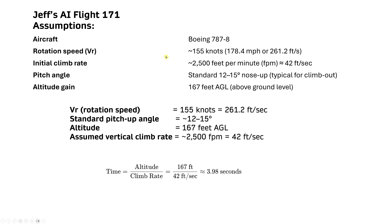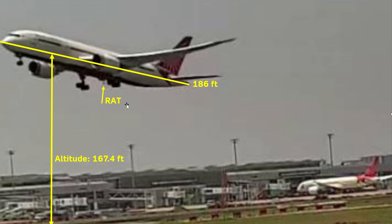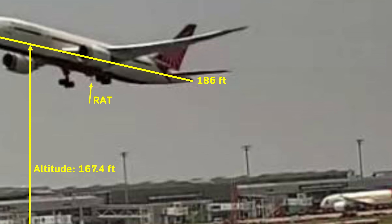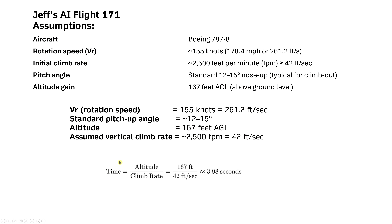Here are the assumptions to calculate how long it's been since liftoff. The VR was 155 knots — from the preliminary report. An initial climb rate is typically 2,500 feet per minute, or 42 feet per second. Pitch angle is normally 12 to 15 degrees nose up for climb-out. Altitude is 167 feet as calculated. When you plug all of these in, the time to reach 167 feet equals altitude divided by climb rate — that's 3.98 seconds, approximately 4 seconds.